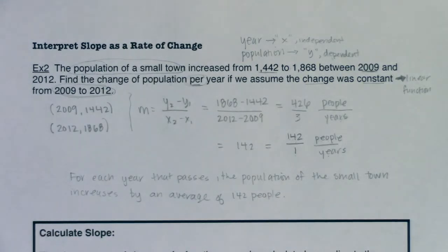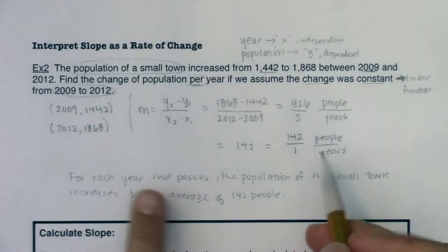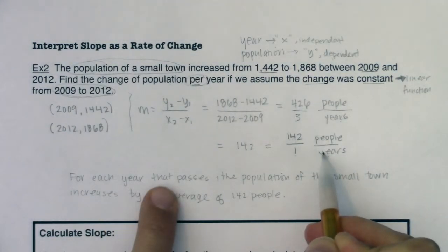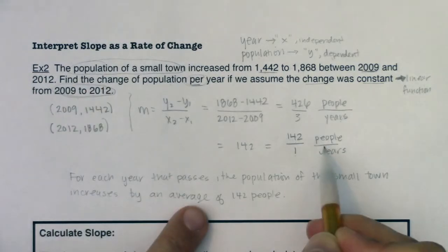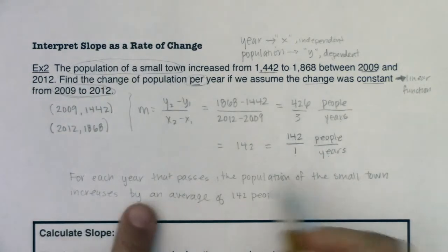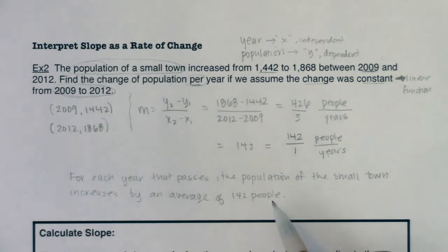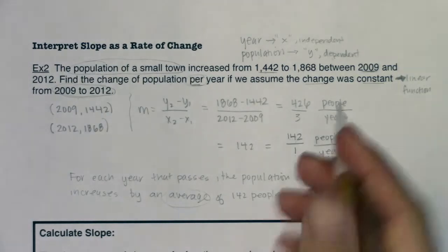So there's my sentence. You see me talking about the units on the x variable - for every year that goes by, the population of the small town, there's my y variable, increases. Now I'm increasing because my slope is positive, and I increase by about 142 people, or you could say 142 people per year. Now why do I have average? That's because slopes are average rates of change. So let me make sure we're writing that down somewhere. Slope is an average rate of change.